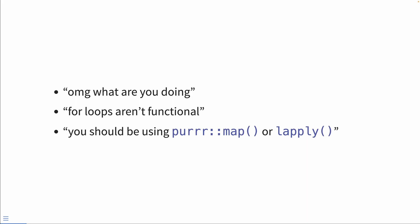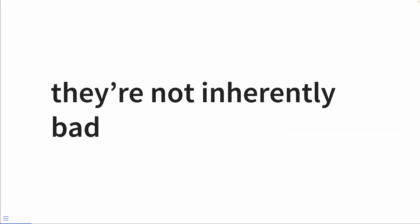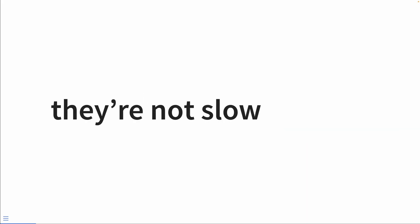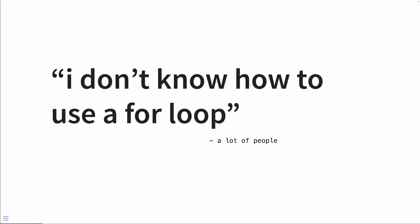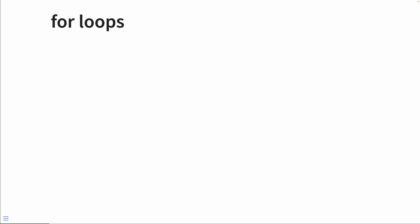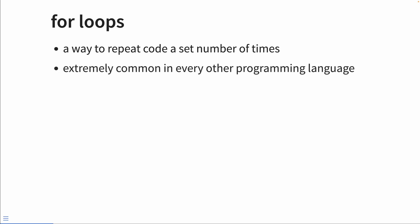Now, I mostly agree with you, but I'm not an extremist or an absolutist, and I think that for loops get a lot of hate. They're not inherently bad, they're not actually slow, the world won't stop if you use one. And there might be some of you that think you don't know how to use a for loop, and that's okay. For loops are a way to repeat a piece of code a set number of times, and they're very common in other languages. But in R, they're not always recommended, and for reasons we'll get into.